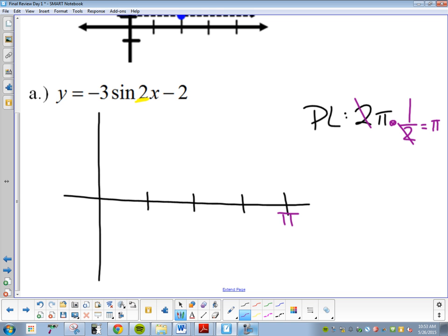The halfway mark is half of that or pi over 2. Then half of pi over 2 is pi over 4. 1 fourth, 2 fourths, 3 fourths or 3 pi over 4. There is my period length.